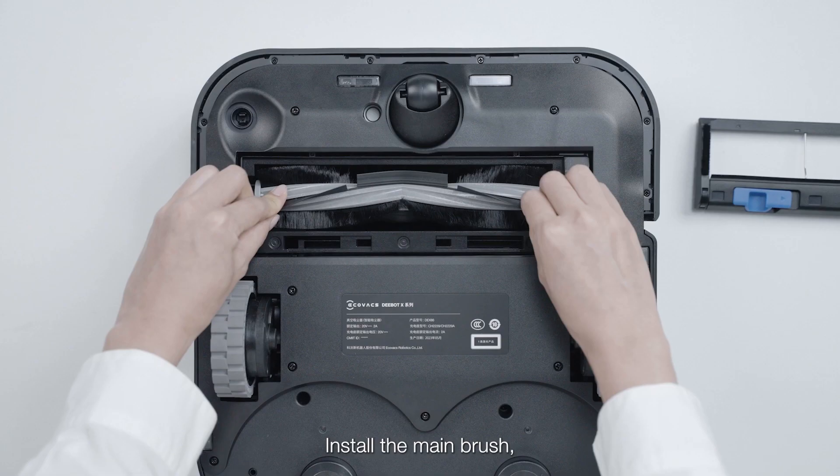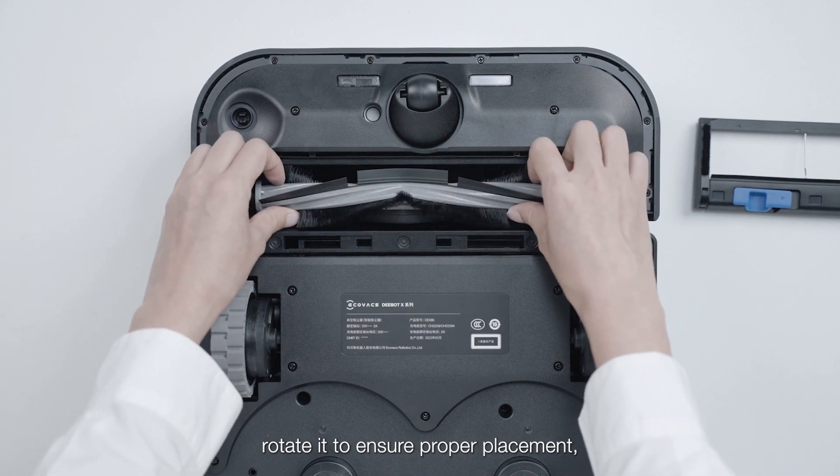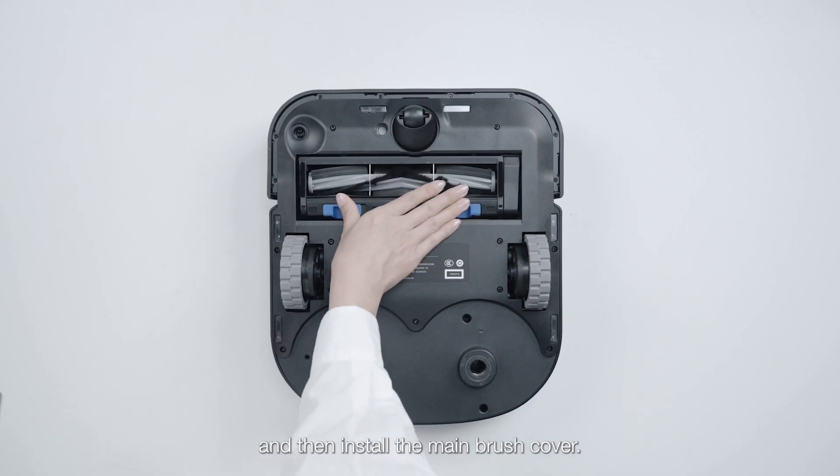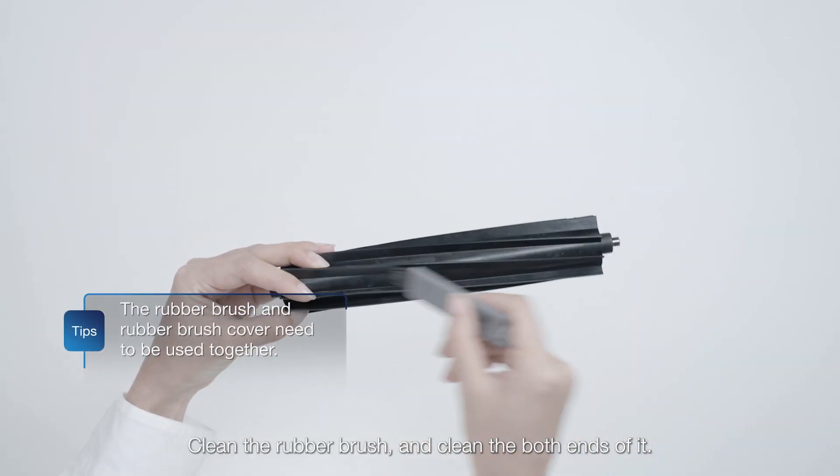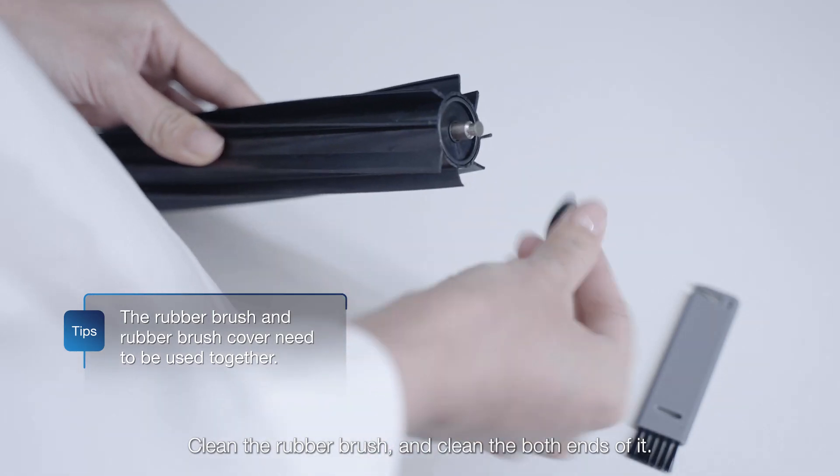Install the main brush. Rotate it to ensure proper placement and then install the main brush cover. Clean the rubber brush and the ends of the rubber brush.